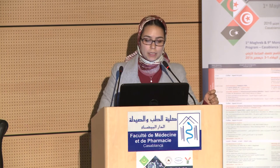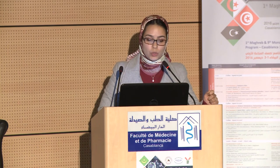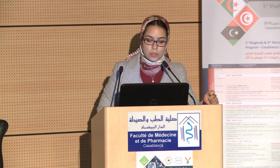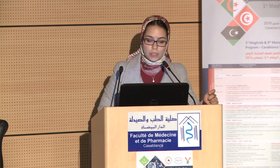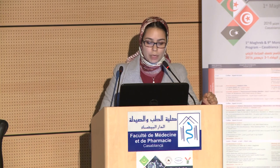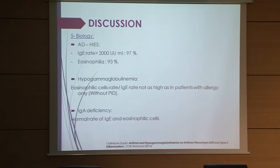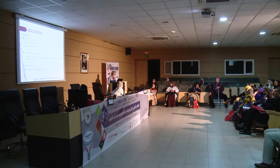Regarding blood analysis: in the autosomal dominant form, the IgE rate is usually above 2,000 units per milliliter — consistent with our study — and eosinophilia is present in 93% of cases. In hypogammaglobulinemia, eosinophil counts and IgE levels are not as elevated as in patients with allergy alone. In IgA deficiency, there is a normal rate of IgE and eosinophilic cells.